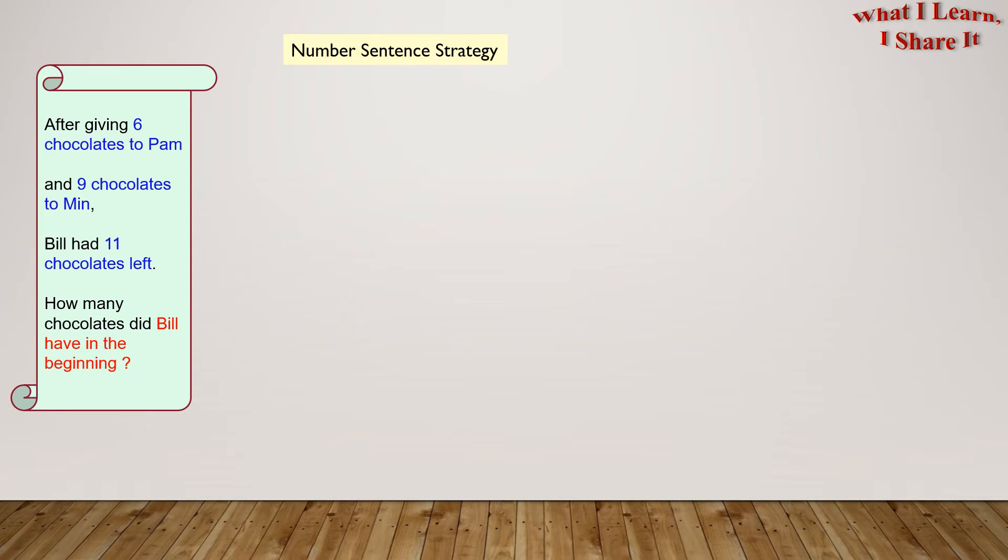Let's start solving with the number sentence strategy. Step 1: Draw a model to show the main idea. Here are the 6 chocolates given to Pam.